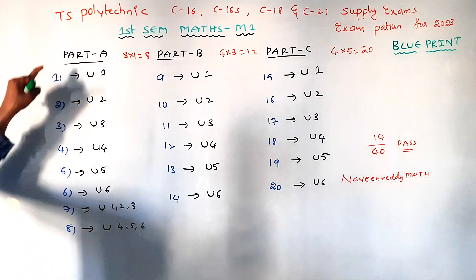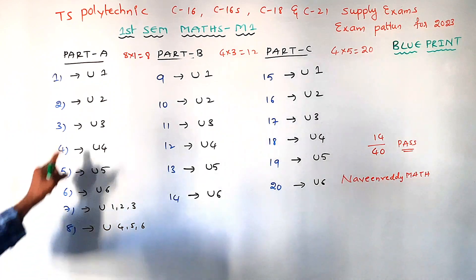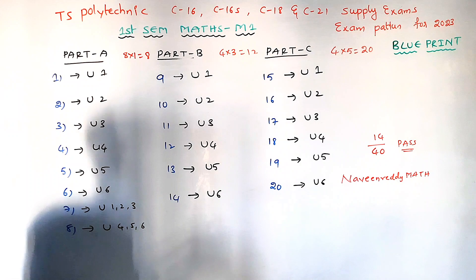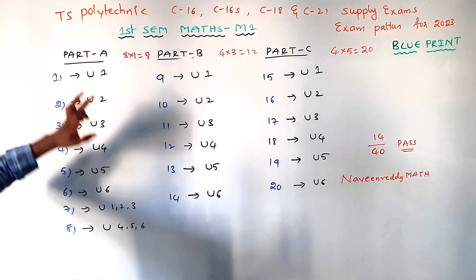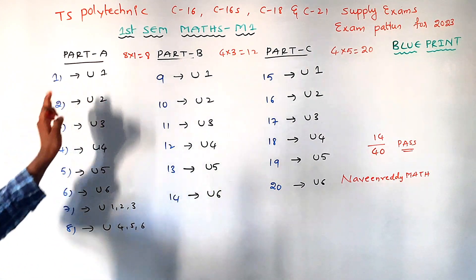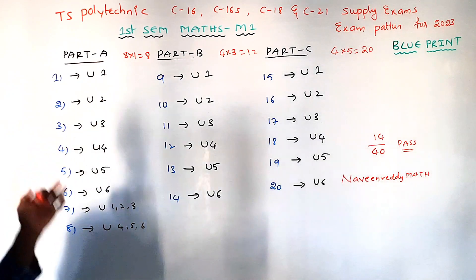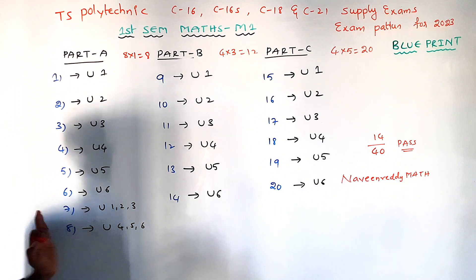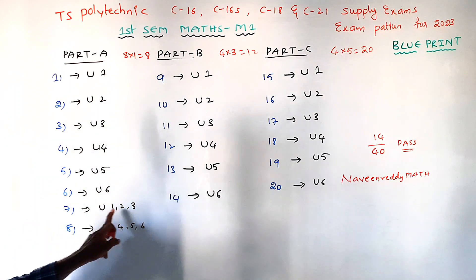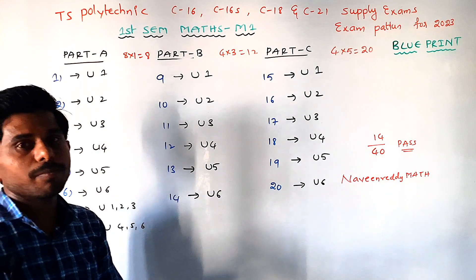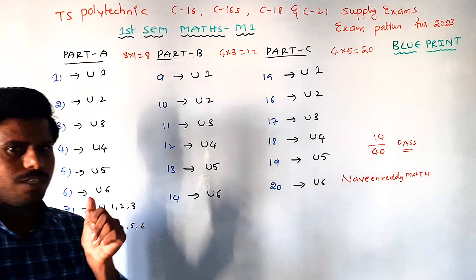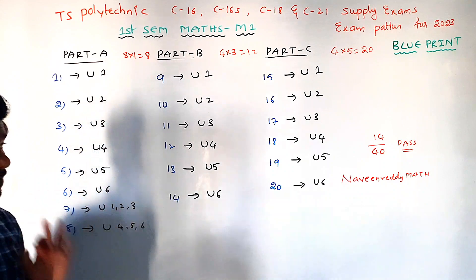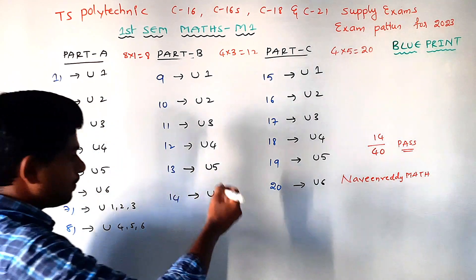In Part A, every question comes from one unit. The first question is from Unit 1, second from Unit 2, third from Unit 3, fourth from Unit 4. The seventh and eighth questions can come from Units 1, 2, or 3 — so if you have 3 units prepared, you can answer any one of those. The next set covers Units 4, 5, and 6.